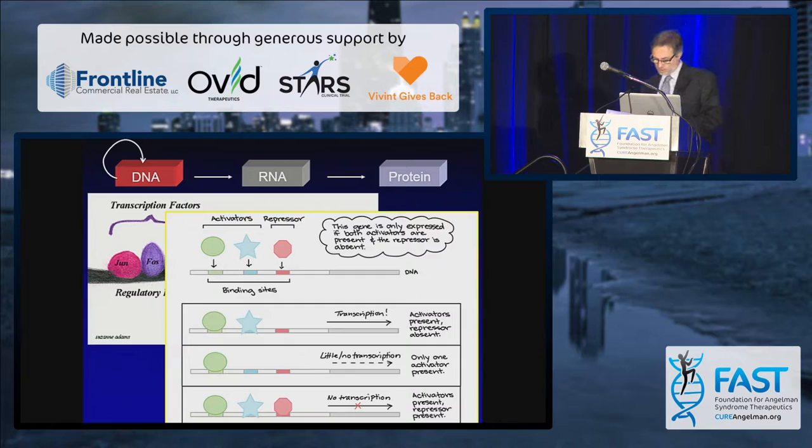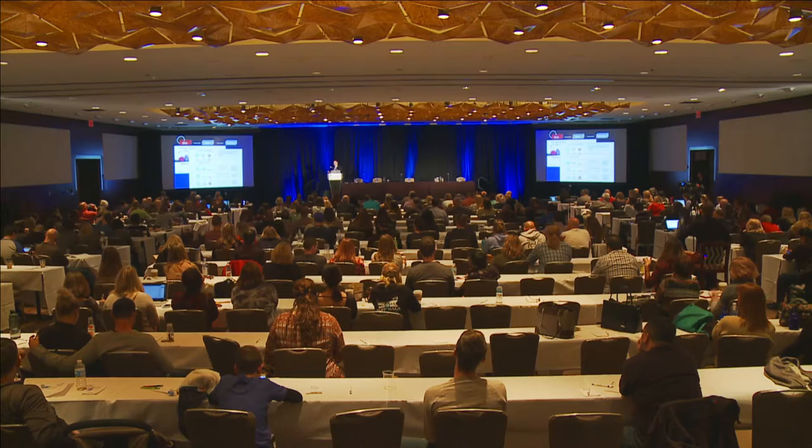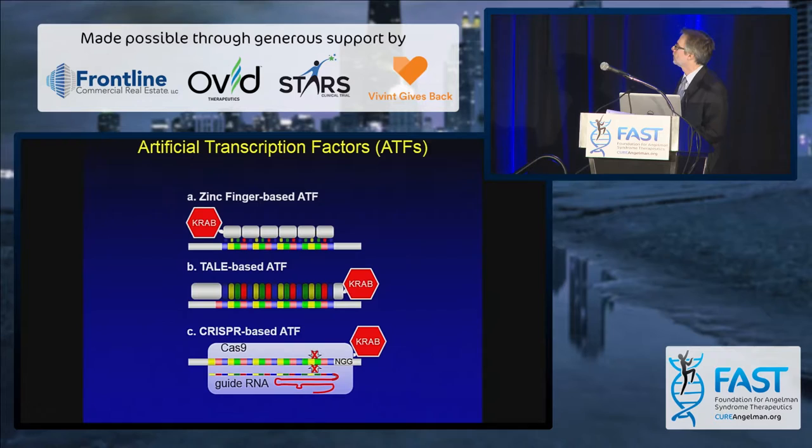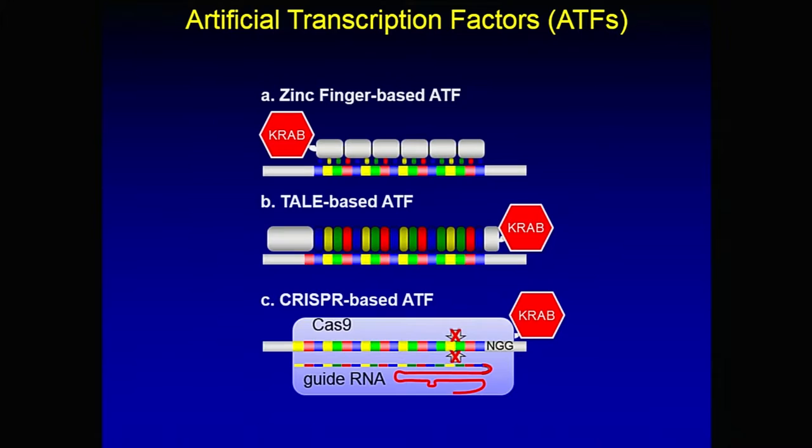Depending on what kinds of transcription factors are binding in this control region right before the gene, it will tell you which gene is going to be turned on. So, in studying how naturally occurring transcription factors work, we can start to think about how we might design transcription factors to do the kind of job that we want them to do, instead of what nature intended.